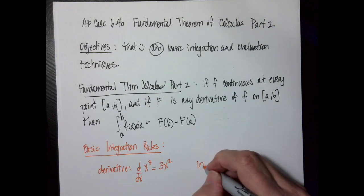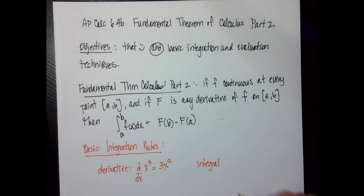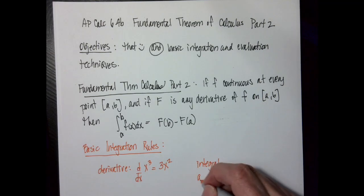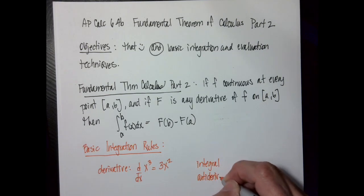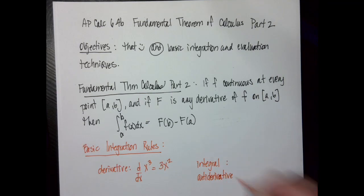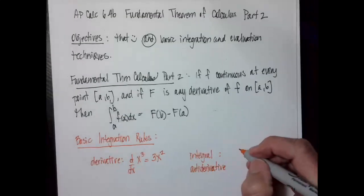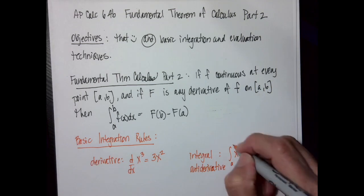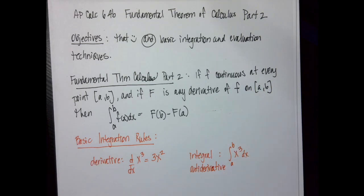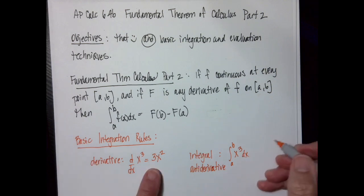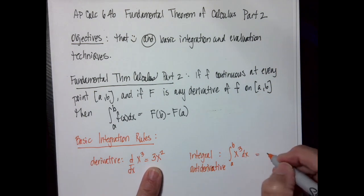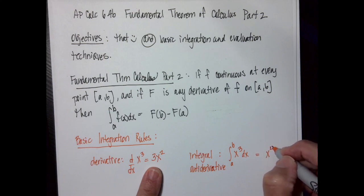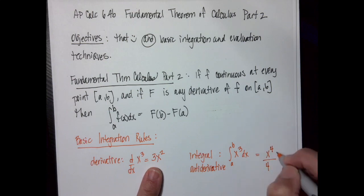When I do an integral, remember it is an antiderivative, so that means it is going in the opposite direction. So for an integral, if I have x to the third and I want to integrate that from a to b dx, my power is going to go up — because the opposite of down is up. So it's going to be x to the fourth divided by the new power, and then I'm going to evaluate that from a to b.